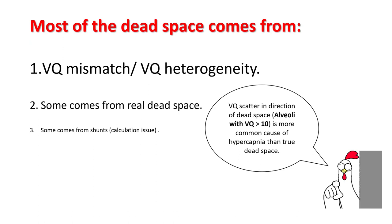The bottom line: most of the dead space does not come from real dead space — it comes from VQ mismatch or VQ heterogeneity, especially alveoli with VQ more than 10. Some portion also comes from real dead space, and some from shunts, which we'll discuss shortly.